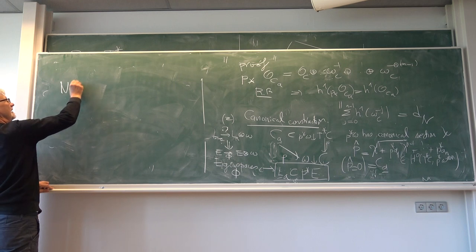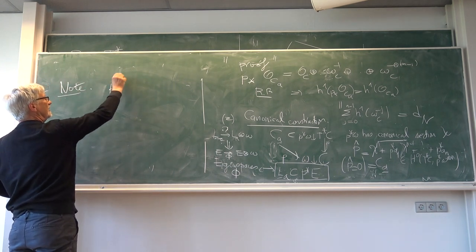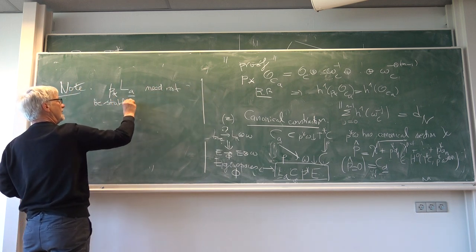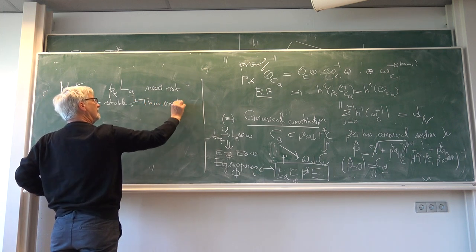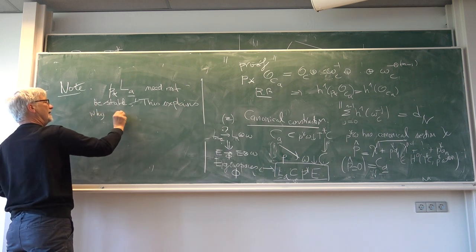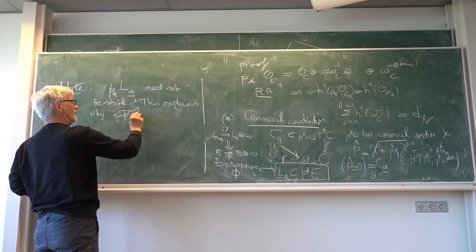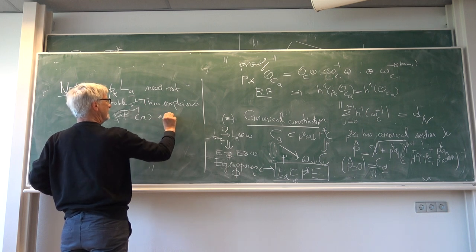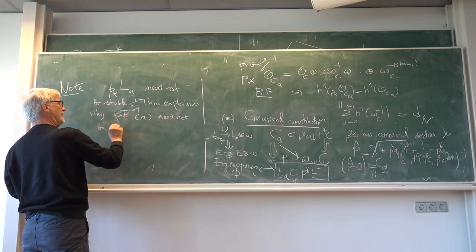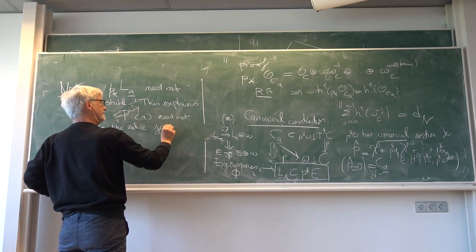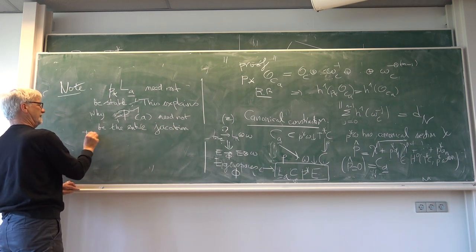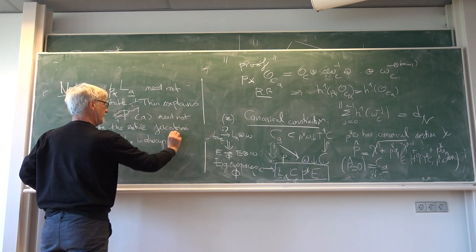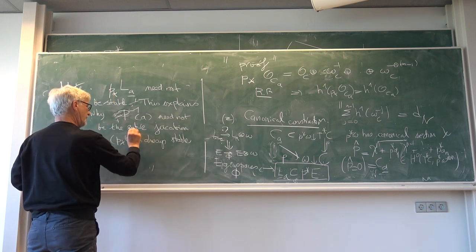So note, P lower star of LA may not be stable. So this explains why pi inverse D to inverse of A. So D dot D, the entire Jacobian. As always stable, P star L with phi is always stable.